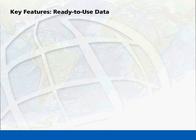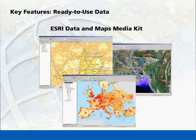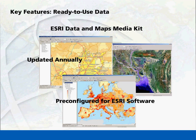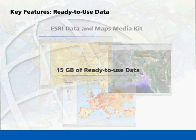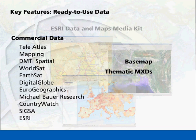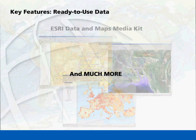ArcView includes the ESRI data and maps media kit, which is updated annually and pre-configured to work with ESRI software. The ESRI data and maps media kit contains more than 15 gigabytes of ready-to-use data, such as base map and thematic map documents, commercial data from numerous providers, street map USA data, and much more.